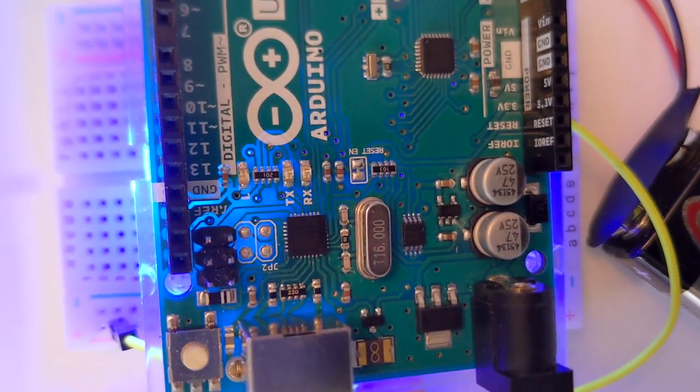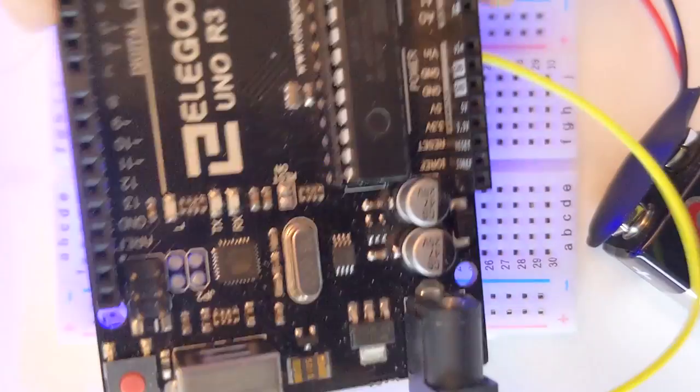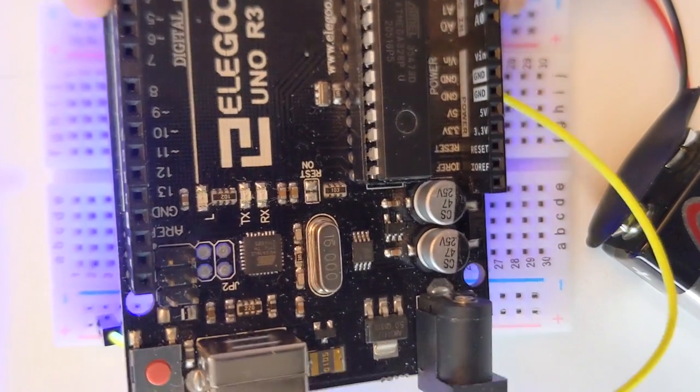And there's also different brands, of course. This Elegoo Uno R3 is another example. Let's start by going over just a few simple parts that we will be using today on our microcontroller. And then we will connect our circuit to it.